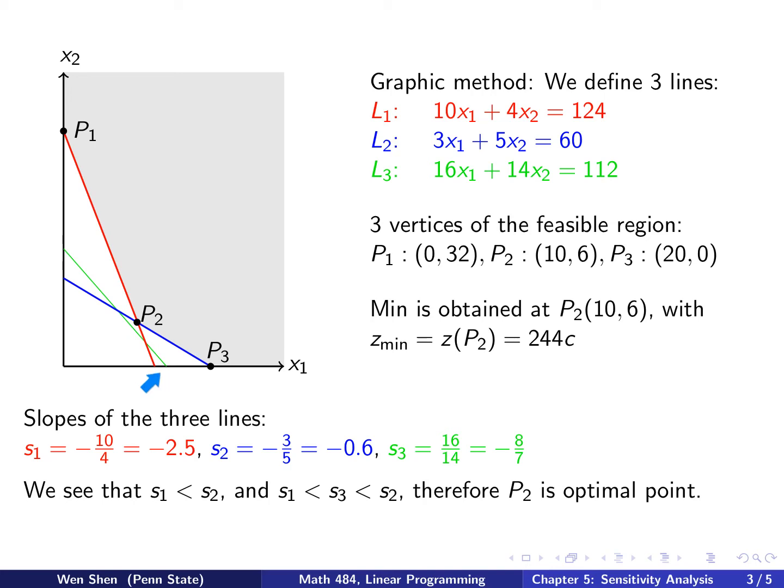You see that if this slope, S3, is between S1 and S2, any value between, then as you move up and down, P2 will be the vertex that you touch first, and it will be the optimal point. I think most of the discussion here shall be familiar to us, and what's interesting is several questions we're going to ask now.